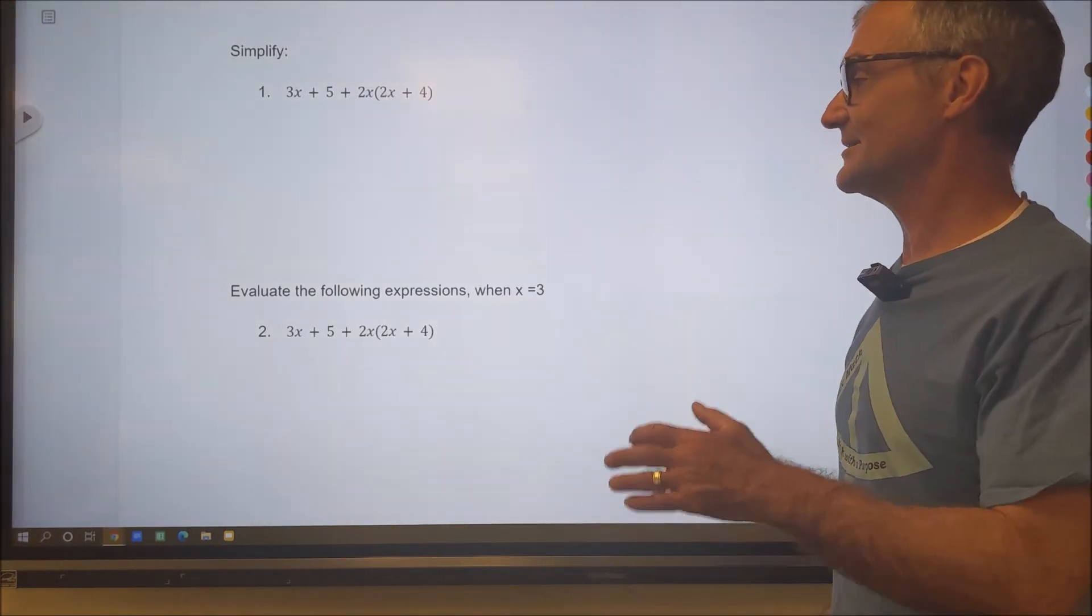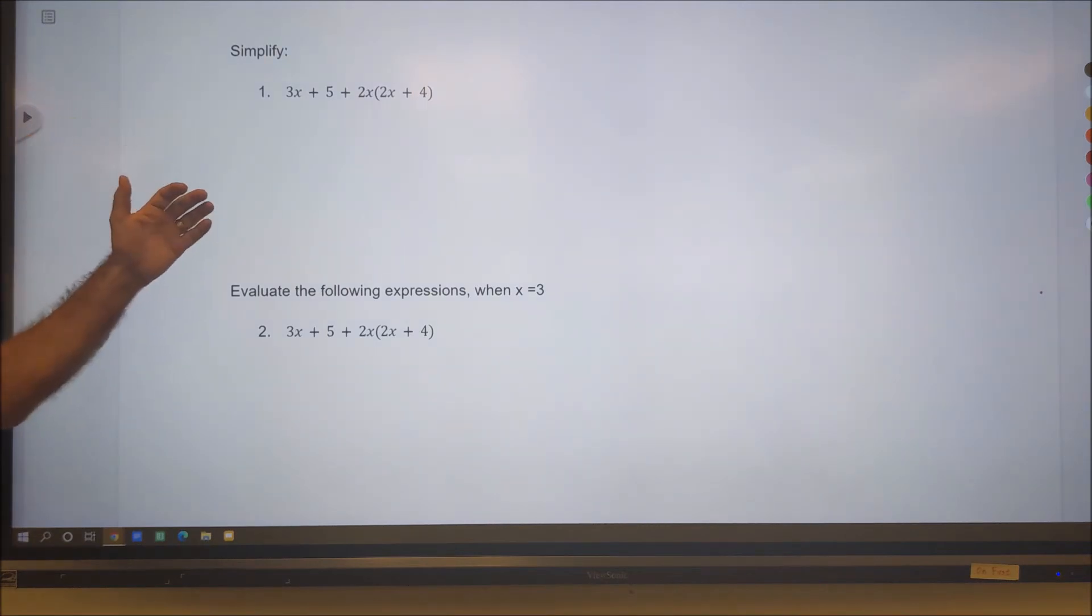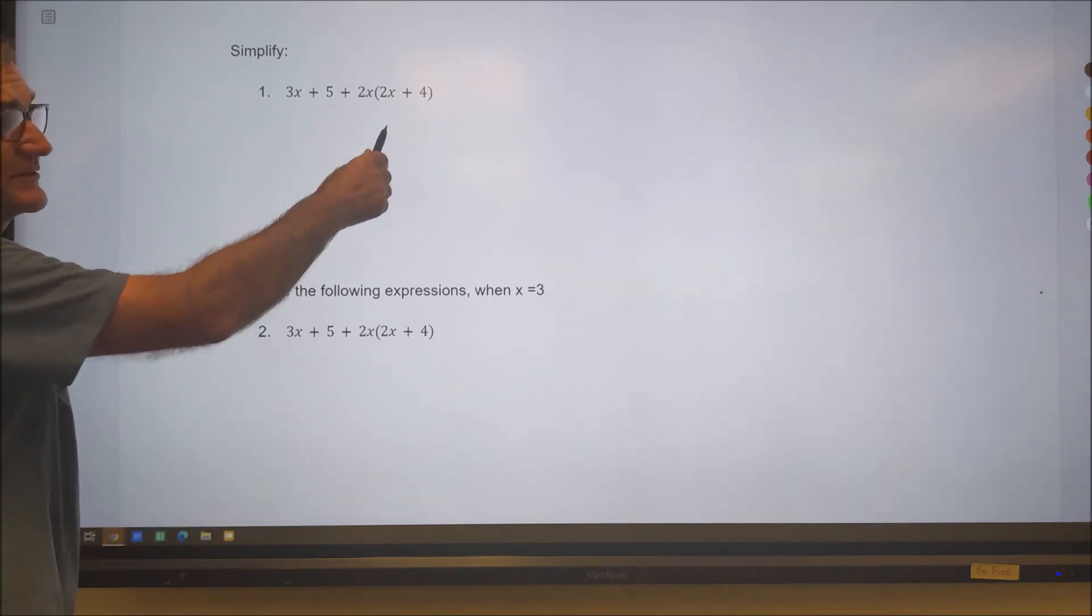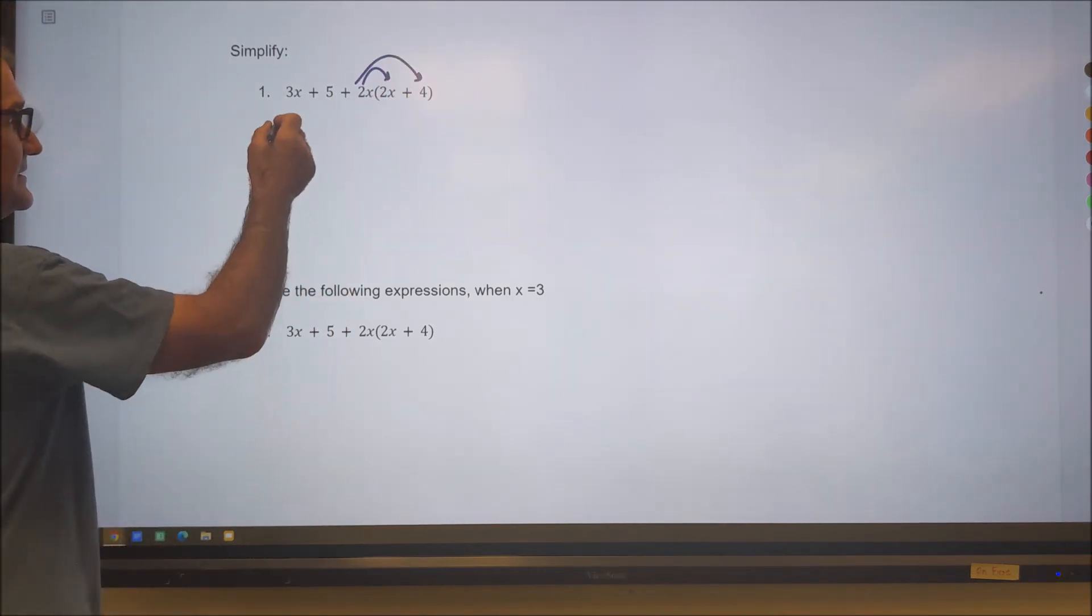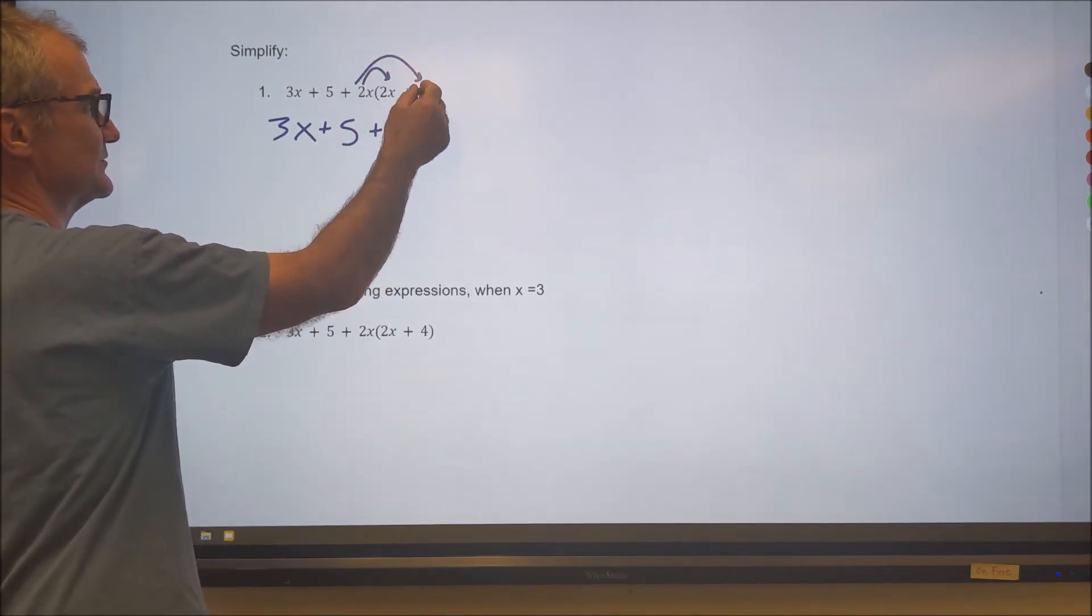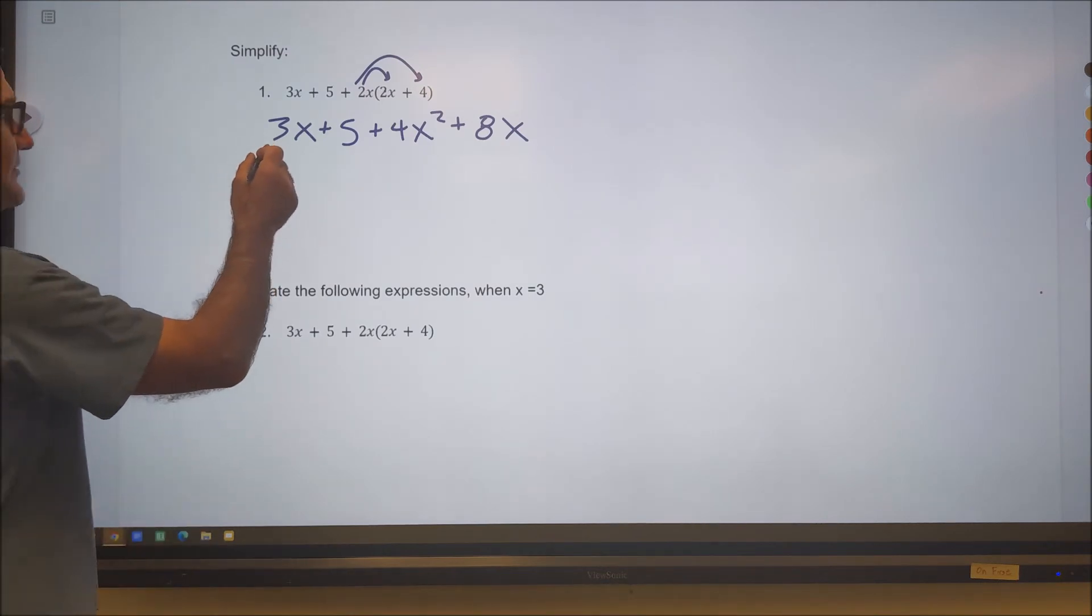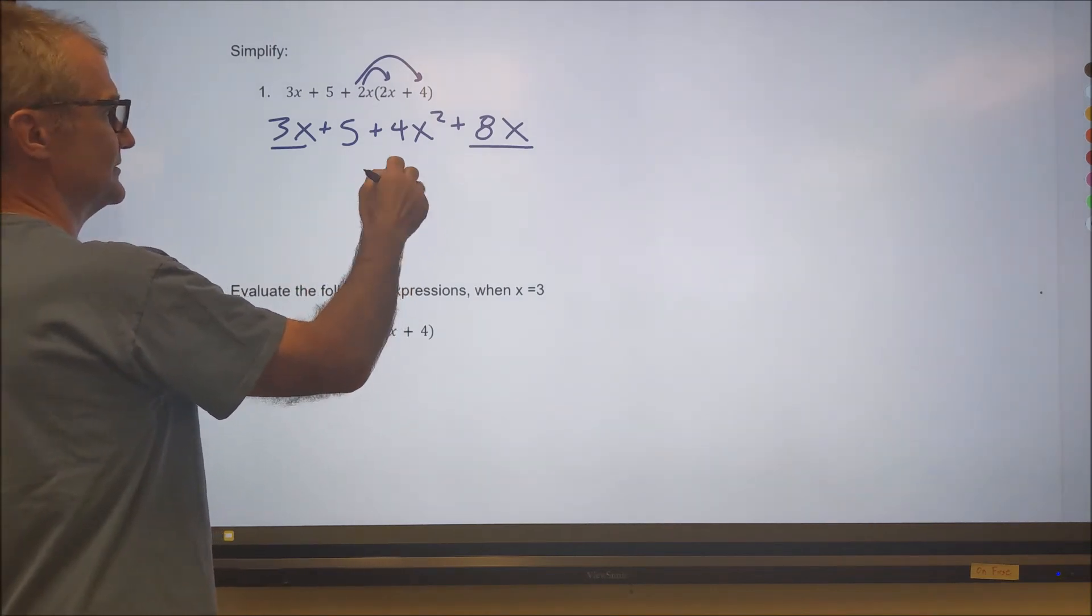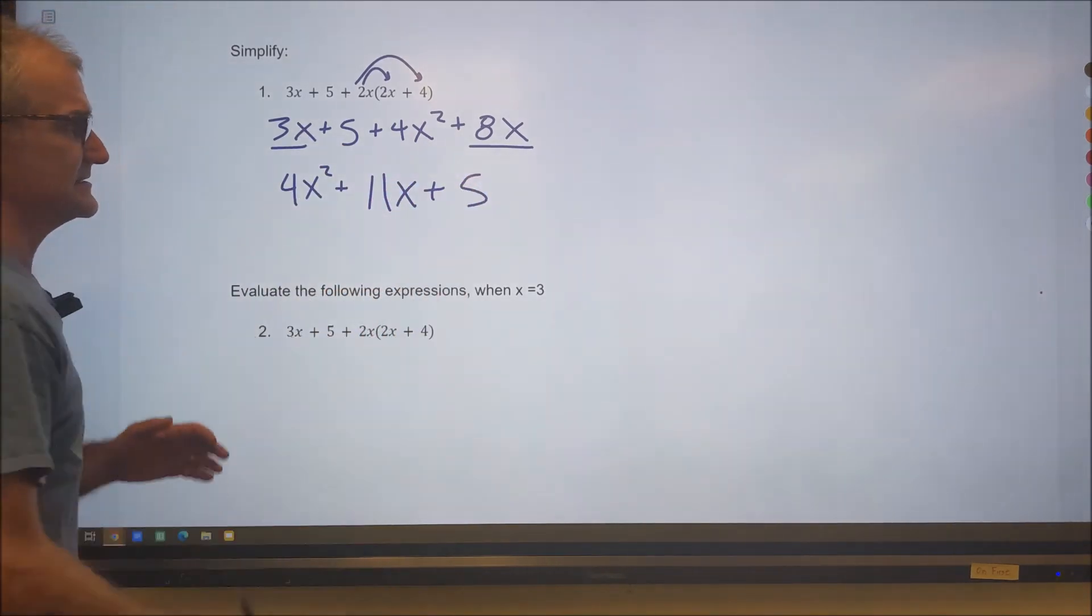Let's do some sample problems right here. Number 1 right here is a simplification. That means just combine the same terms. I have to use the distributive property. So the first thing I do is I distribute that 2x through that quantity. 2x times 2x is 4x squared. And then 2x times 4 is just 8x. Now that I've distributed, the next step is combine similar terms. I have a 3x and an 8x. I could combine that to say I have 11x. Right here I have a 4x squared. And then I have that 5. That's as simplified as that problem can get.